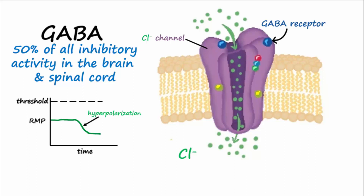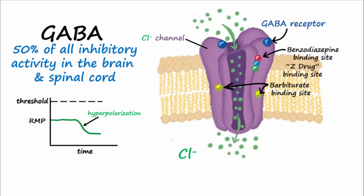These chloride channels also have binding sites for benzodiazepines and barbiturates, as well as other hypnotic drugs like zolpidem, which falls under the category of Z-drugs. When these drugs bind to their binding site on the chloride channel, the inhibitory actions of GABA are enhanced.